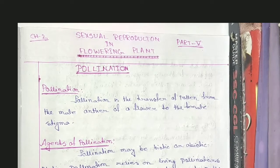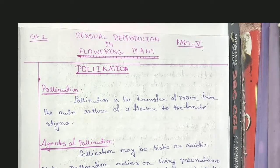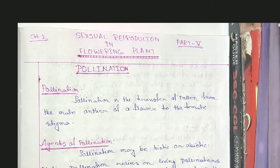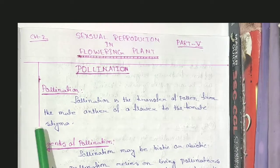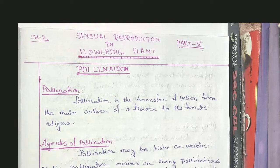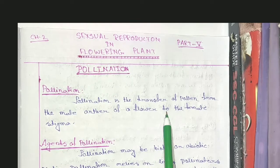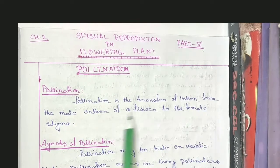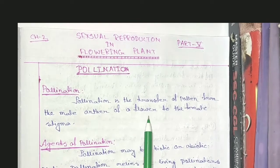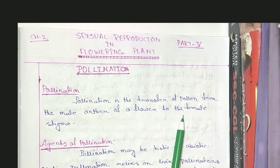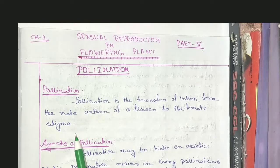So what is pollination? Pollination means transfer of pollen grains from one flower to another flower. More precisely, pollination is the transfer of pollen from the male anther of a flower to the female stigma.